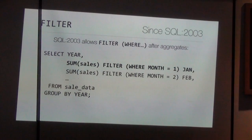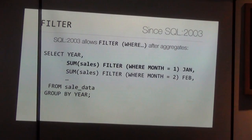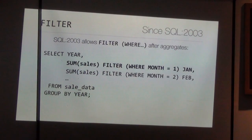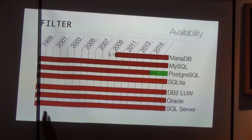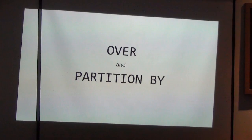A more readable alternative is the FILTER clause. The FILTER clause may follow any aggregate function — SUM, MIN, MAX, AVG, COUNT. What you write there is a WHERE clause. You just specify which rows are to be aggregated. It's the very same result as before — instead of a CASE expression inside the aggregate, you use FILTER to say: this time sum up sales from month one, month two, and so on. Just a nicer way to do what you could have done with CASE. It's a simple tool that makes everything much clearer.